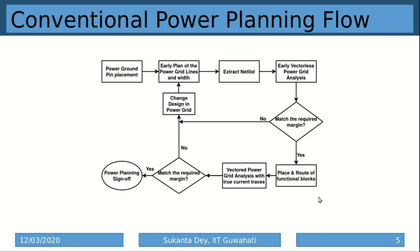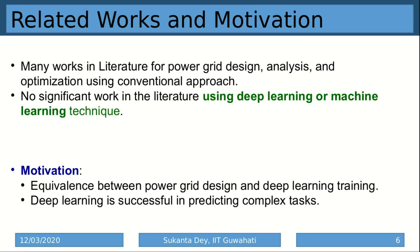This is a very lengthy process with lots of iterations. We will try to replace this whole power planning phase using a deep learning and machine learning approach, where we will not be using any power grid analysis method. Many works in the literature in the last two decades deal with power grid design, analysis, optimization, and verification using different heuristics. However, there is no significant work using deep learning or machine learning, and all the existing methods suffer from large convergence time. Our motivation is to reduce this convergence time of the power planning phase.